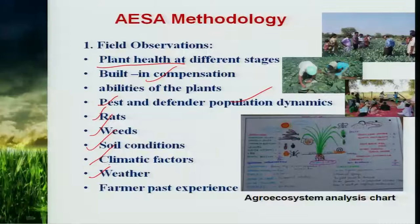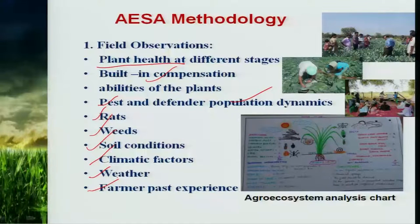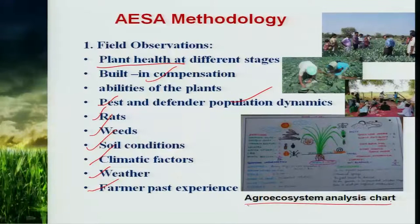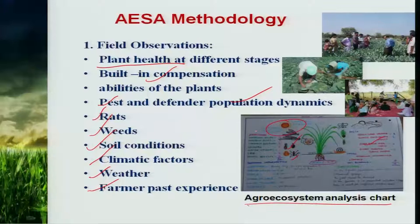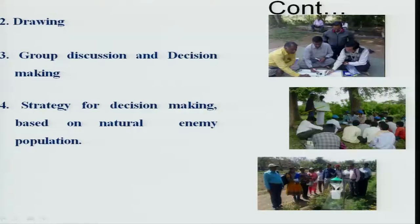The present condition of the crop, including abiotic factors influencing on that day, and even past experience of the farmer are needed for decision making. After observing, he has to prepare an agro ecosystem analysis chart on a drawing paper, using different color pencils — one side depicting the insect pests attacking the crop, the other side showing defenders like parasitoids and predators, and overall weather conditions such as cloudy or sunny.